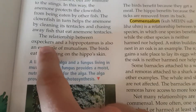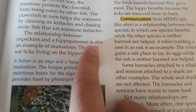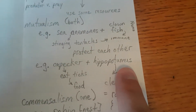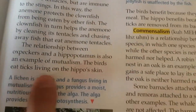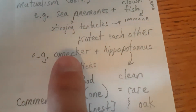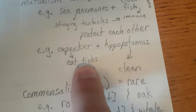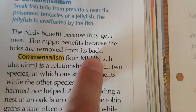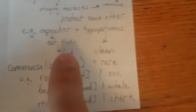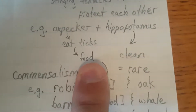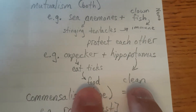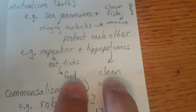In this way, the anemone protects the clownfish from being eaten by other fish. The clownfish, in turn, helps the anemone by cleaning its tentacles and chasing away fish that eat anemone tentacles. So they protect each other. The relationship between oxpeckers — a type of bird — and a hippopotamus is also an example of mutualism. Oxpecker plus hippopotamus. The birds eat ticks living on the hippo's skin. The birds benefit because they get a meal. The hippo benefits because the ticks are removed from its back. They're both benefiting: the oxpecker gets food, the hippopotamus gets clean from parasites and ticks.